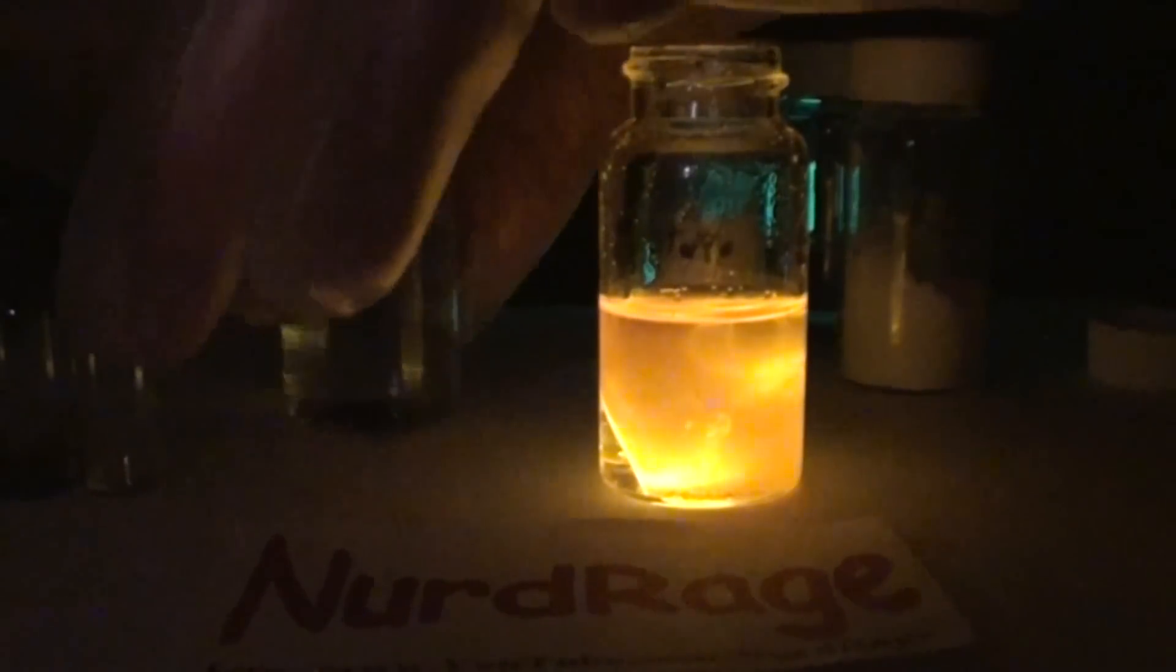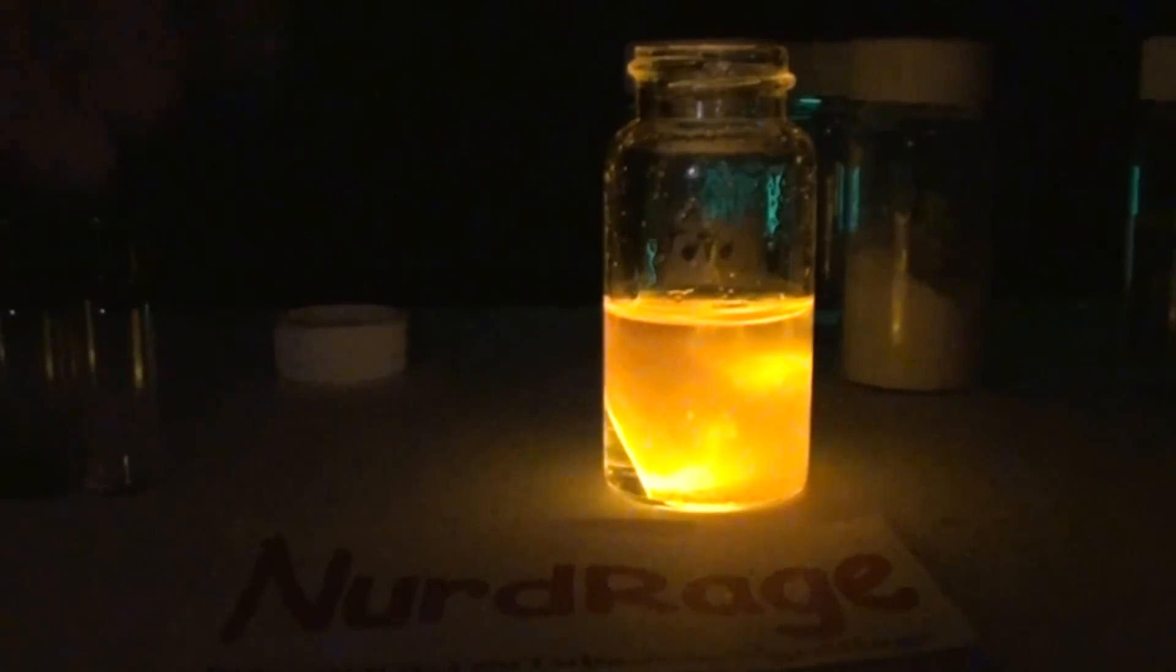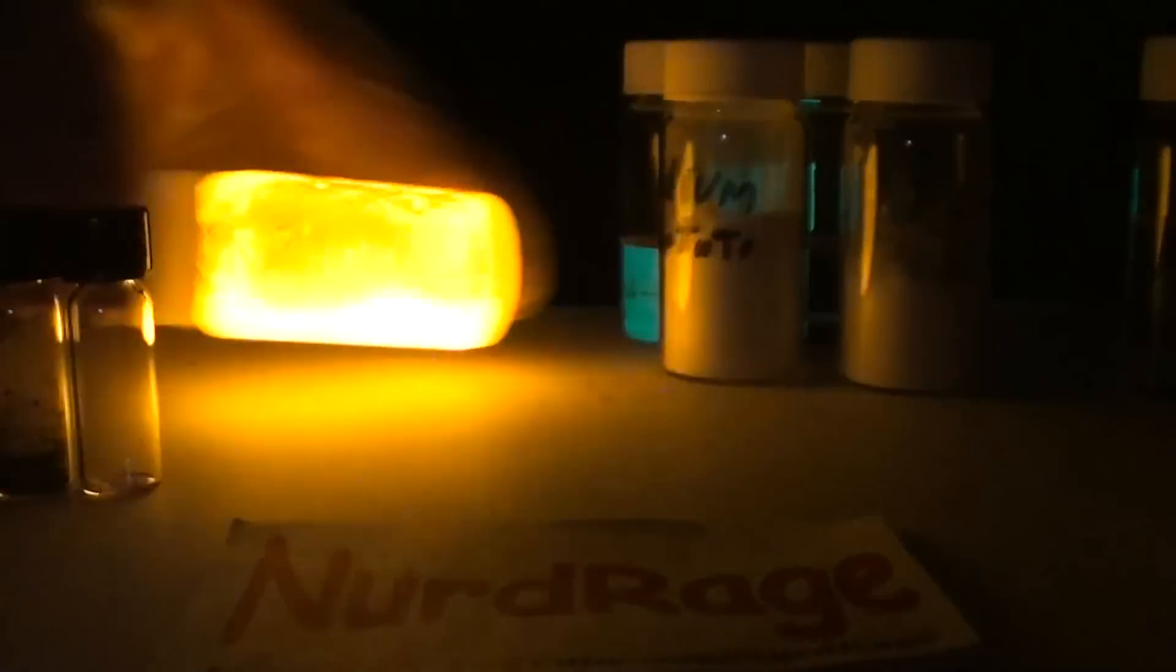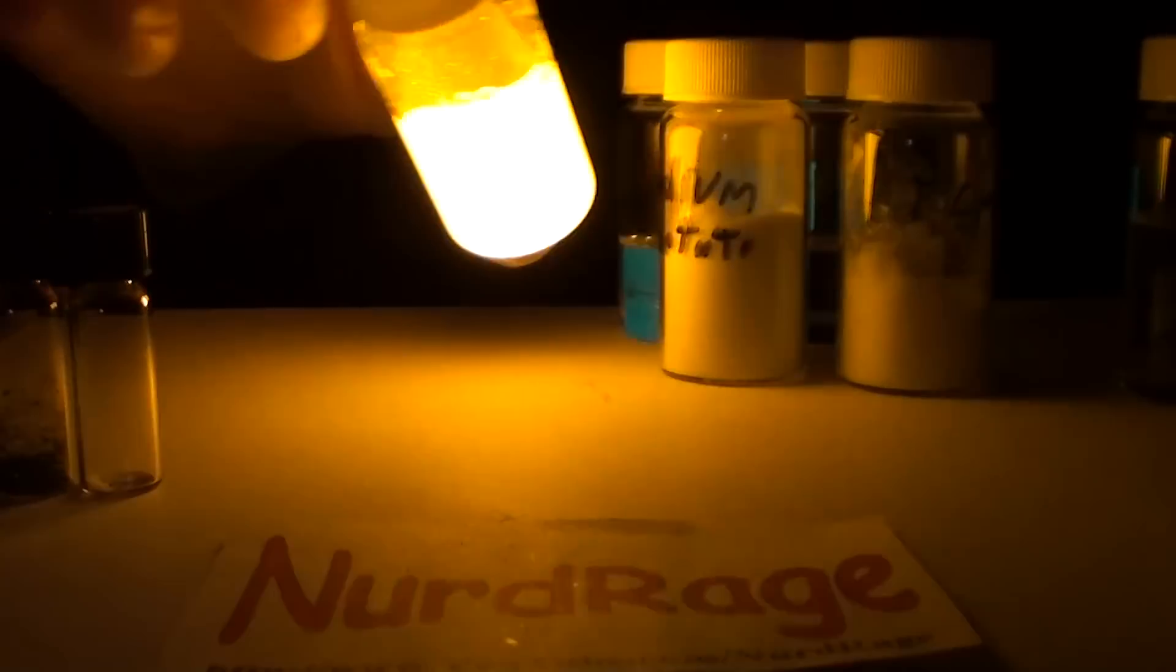A glow stick reaction uses chemicals instead of light to excite the electrons in a fluorescent dye. This is why glow sticks must be made with fluorescent dye. You need to have the ability to emit light.